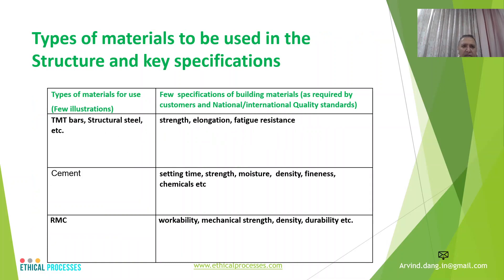There are different kinds of materials used in making a structure. I will share some key materials and their characteristics that designers should specify at the design stage. First are TMT bars and structural steel — key characteristics designers should specify include strength, elongation, fatigue resistance, and sizes. Cement is also important: the designer must specify the cement grade, setting time, strength, moisture content, density, fineness, and chemical properties.